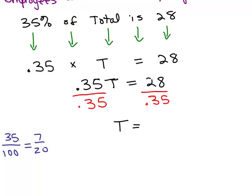Okay. So I'm going to take my original problem here. 35 percent of the total is 28, but instead of writing 0.35, I'm going to write 7 twentieths. Okay? So we've got 7 twentieths times T, which I'm going to just write times T equals 28.